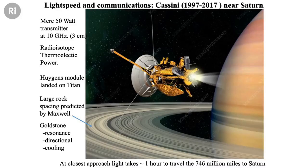The one at Goldstone is 70 metres. Secondly, they're transmitting and receiving on the same frequency — of course, that helps a lot. But most importantly, they cool the receiver at Goldstone down to about zero temperature, and what that does is to quieten all the hiss and static that you normally hear when you tune a radio between stations.